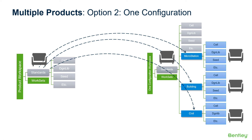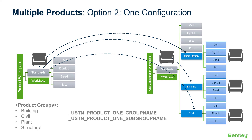In doing so, you provide a chair for each product group. Product groups would be things like building, civil, plant, and structural. Special variables have been created by each product, which are established in the launching of the product. These are USTN1 product group name and USTN product1 subgroup name.